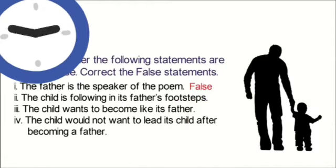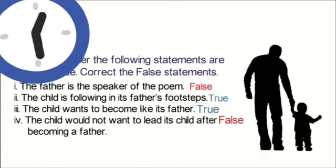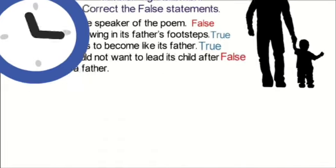Pahela hai. The father is the speaker of the poem - False. The child is following his father's footstep - True. Third. The child wants to become like his father too - True. And the fourth. The child would not want to lead - This is wrong, false. The child would not want to follow his father.